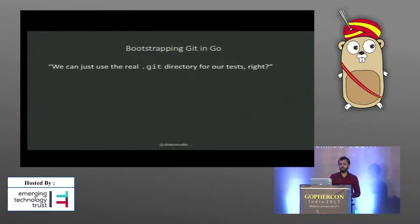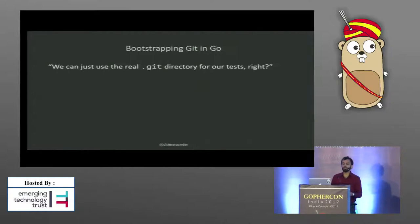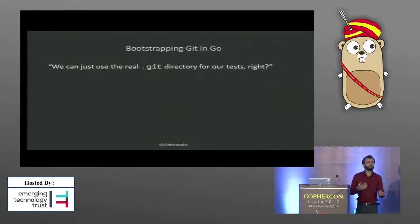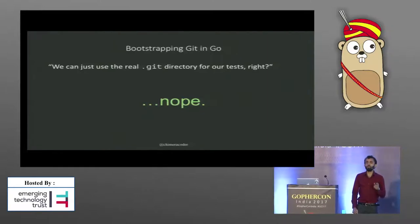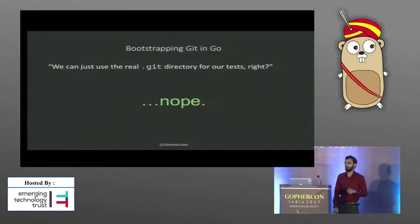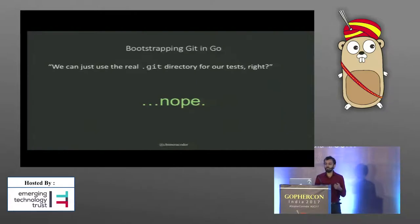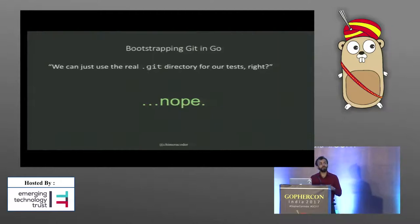At first, we started implementing object parsing by bootstrapping GitGo using the actual Git objects stored in the repository for our tests. That sounds reasonable — as long as you're not rebasing or force-pushing, the Git history is going to be immutable, right? But that's wrong. The history that Git represents is immutable, but the way that Git stores that history might actually change.